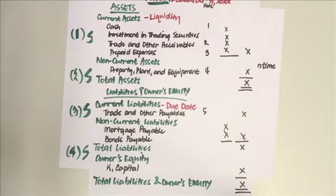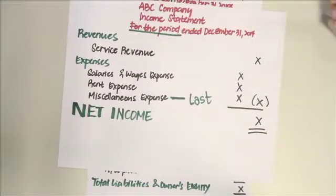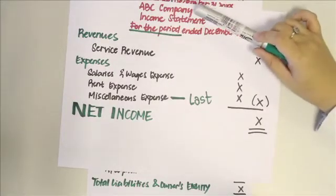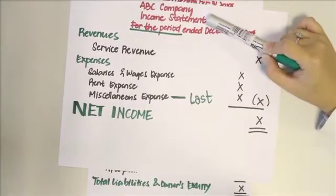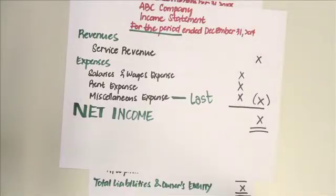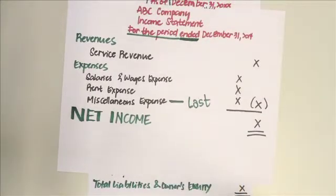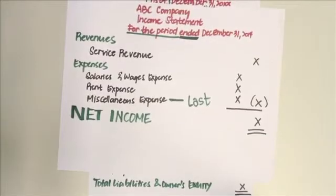Moving forward to the income statement — just like the statement of financial position, we need the heading: company name, type of statement (income statement), and then the date. Notice we use 'for the period ended December 31, 2014' rather than 'as of,' because when preparing the income statement you're tracing changes and transactions that occurred over a whole period — from day one to the date of the financial statement.